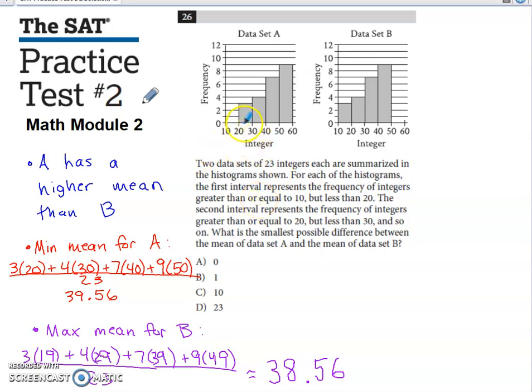On this stretch of the x-axis for data set A, the smallest value would be 20. So if I assume that all three of the values from data set A that fell on this stretch of the x-axis were 20, that would be the extreme case for that portion of the histogram for data set A.